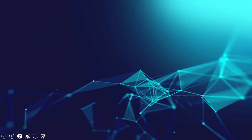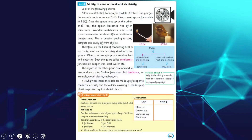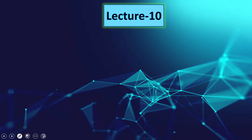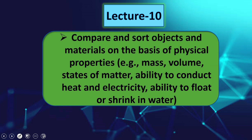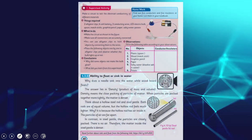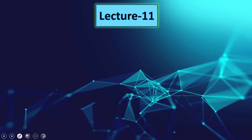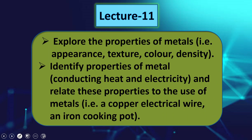In lecture number nine, students will again compare and sort objects and materials on the basis of physical properties — ability to conduct heat and electricity, ability to float or sink in water — and the reading page included is page number 59. In lecture number ten, students will again compare and sort objects and materials on the basis of physical properties: mass, volume, states of matter, ability to conduct heat and electricity, and ability to float or sink in water. We have already discussed mass, volume, and states of matter separately; now we will discuss the ability to float or sink in water, given on page number 60.